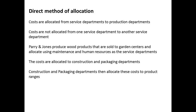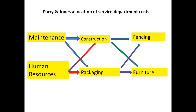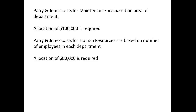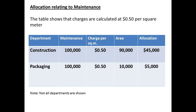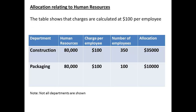The firm of Parry & Jones has maintenance and human resources service departments, and each of these will allocate costs to the construction and packaging departments. The diagram shows these relationships, with charges going from service departments to production departments, and then the charges within these departments being allocated to production lines for fencing and furniture. Maintenance costs of $100,000 are to be allocated, and human resources a sum of $80,000 to be allocated. The floor area has been chosen as the allocation basis for maintenance, and is charged at $0.50 per square meter. Using this base, construction is charged $45,000, and packaging is charged $5,000. The charging from human resources is allocated per employee, at a rate of $100 per employee, producing a charge of $35,000 for construction, and $10,000 for packaging.